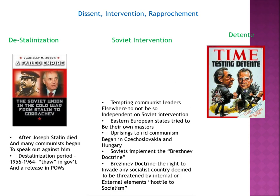Soviet intervention — Eastern European states tried to be their own masters because of heavy Russian influence, attempting uprisings to get rid of the communism influencing those countries. The Soviets came up with the Brezhnev Doctrine, stating that the Soviets have the right to invade any socialist country deemed threatened by internal or external elements hostile to socialism. Essentially, similar to the Roosevelt Corollary, if something is happening in these Eastern countries that looks like it's going to harm socialist-communist intentions, they have the right to go in and stop it.